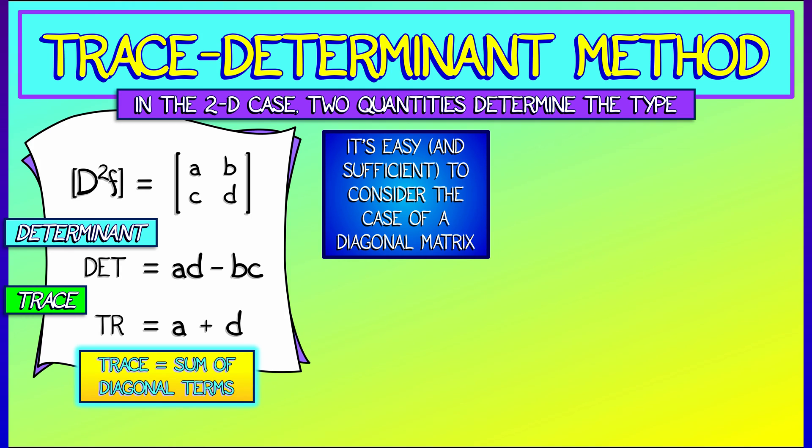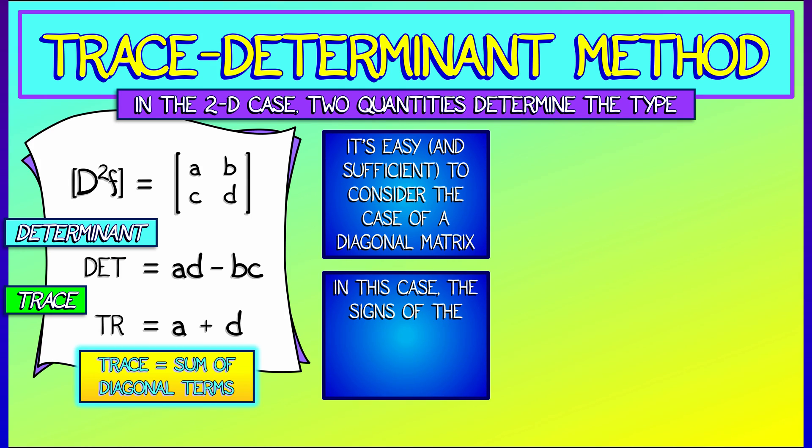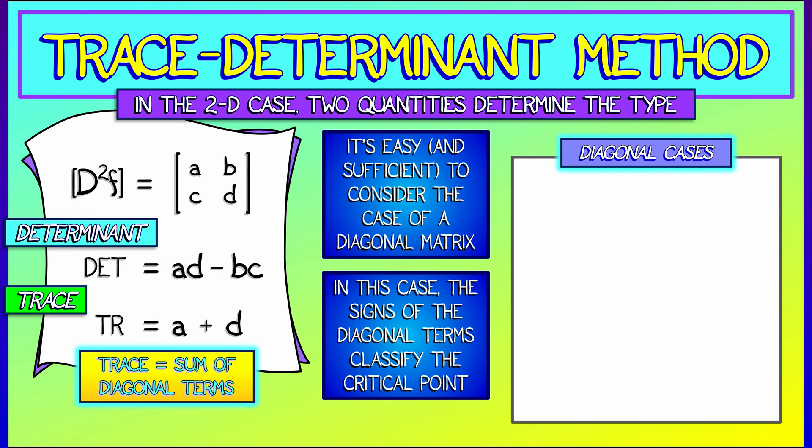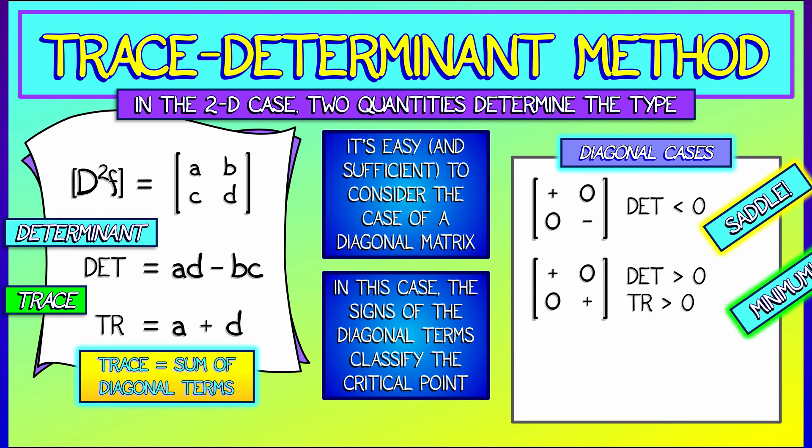To explain how this works, I'm going to assume that I have a diagonal matrix where it's obvious to see what type of critical point we have. This method will work for non-diagonal matrices as well. So let's say that I have a diagonal matrix with one of the entries positive, the other entry negative. That's obviously a saddle point, and that has a negative determinant. If, on the other hand, I have positive entries along the diagonals, that's a local minimum. That has positive determinant, but also positive trace.